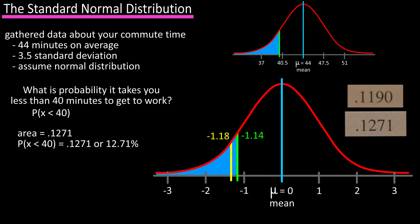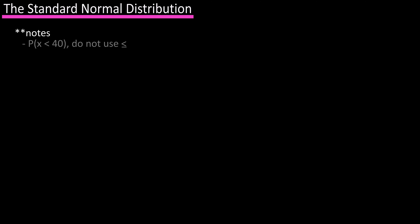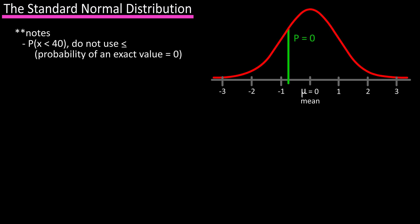For our question, we would answer: there is a 12.71% probability that it takes less than 40 minutes to get to work tomorrow. When we write this probability, we write it as probability of x less than 40 — we don't use less than or equals to. The reason is that for a continuous variable, the probability of an exact value is zero, as vertical lines in theory have no area.